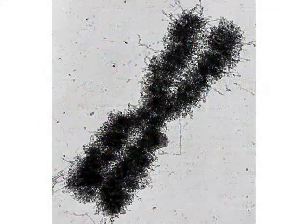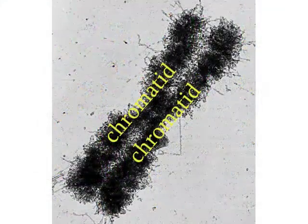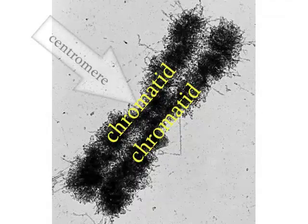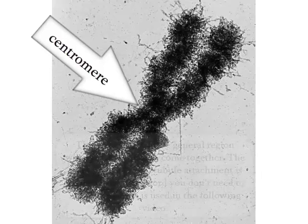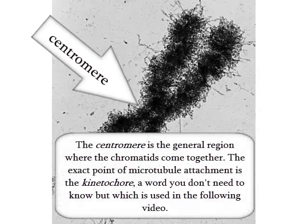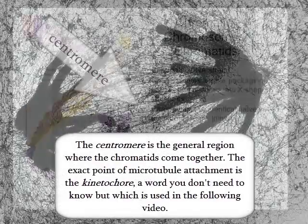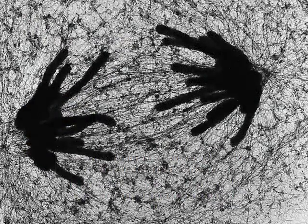Chromatids are the two identical halves of the chromosome that are joined together at the centromere. The centromere is the point at which the mitotic spindle — which we saw in module 4 when we were looking at cell division — attaches and tears the two chromatids apart.